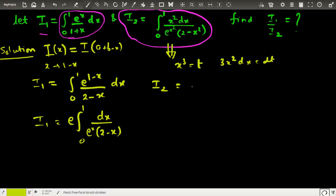Putting the substitution, I get I₂ as 1/3 times the integral from 0 to 1. In place of x²dx I can write dt/3, which gives I₂ = (1/3)∫dt/(e^t(2-t)).